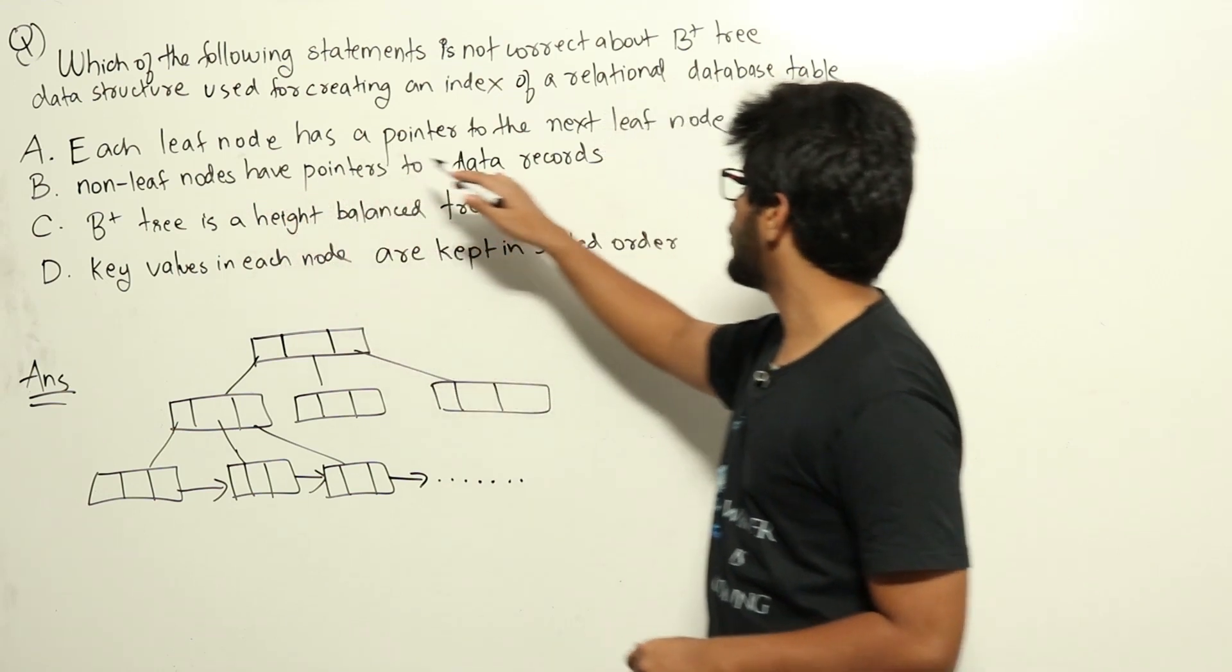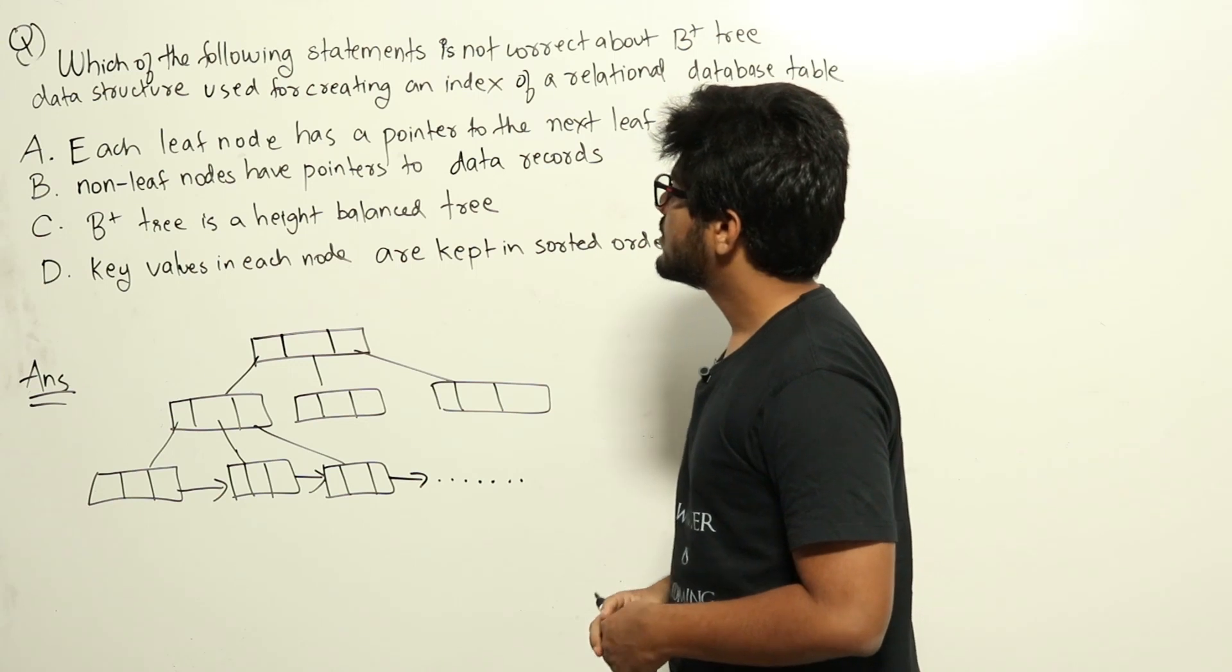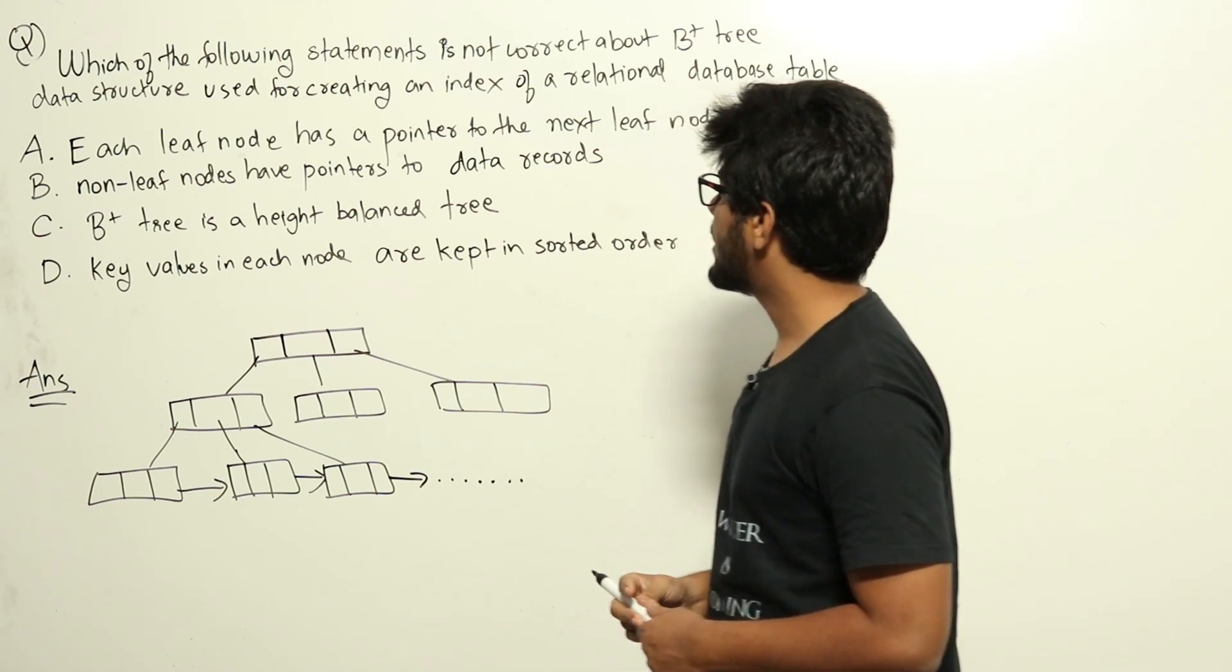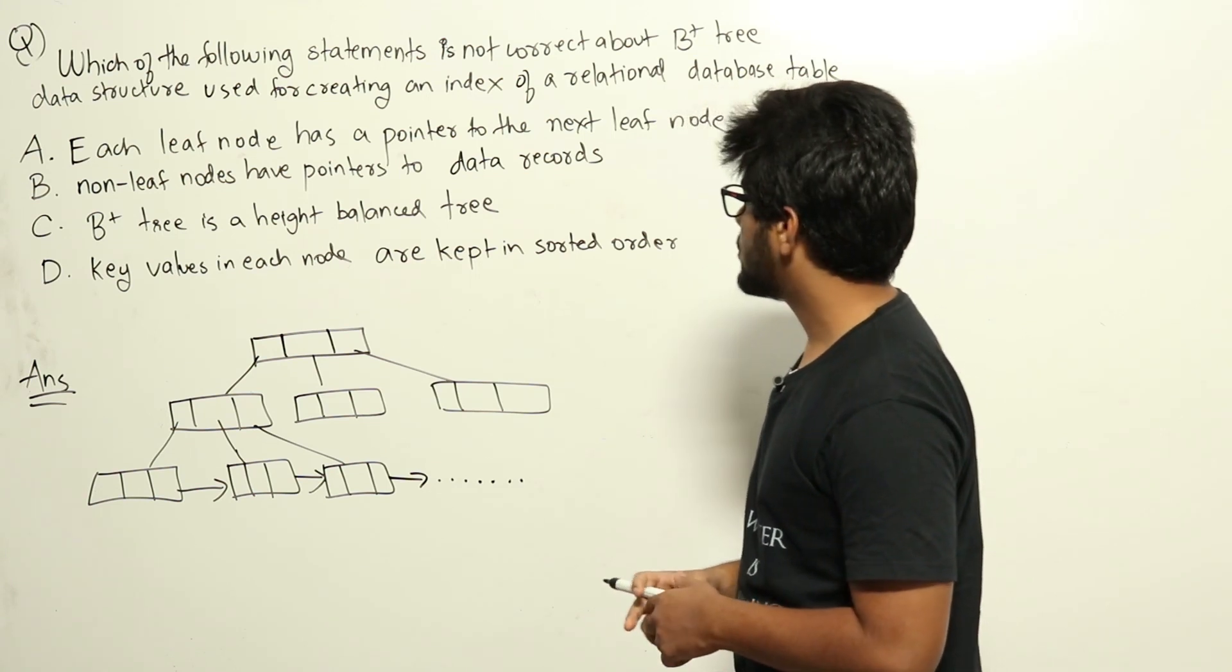A. Each leaf node has a pointer to the next leaf node. Option B. Non-leaf nodes have pointers to data records. C. B plus tree is a height balanced tree. And D. Key values in each node are kept in a sorted order.